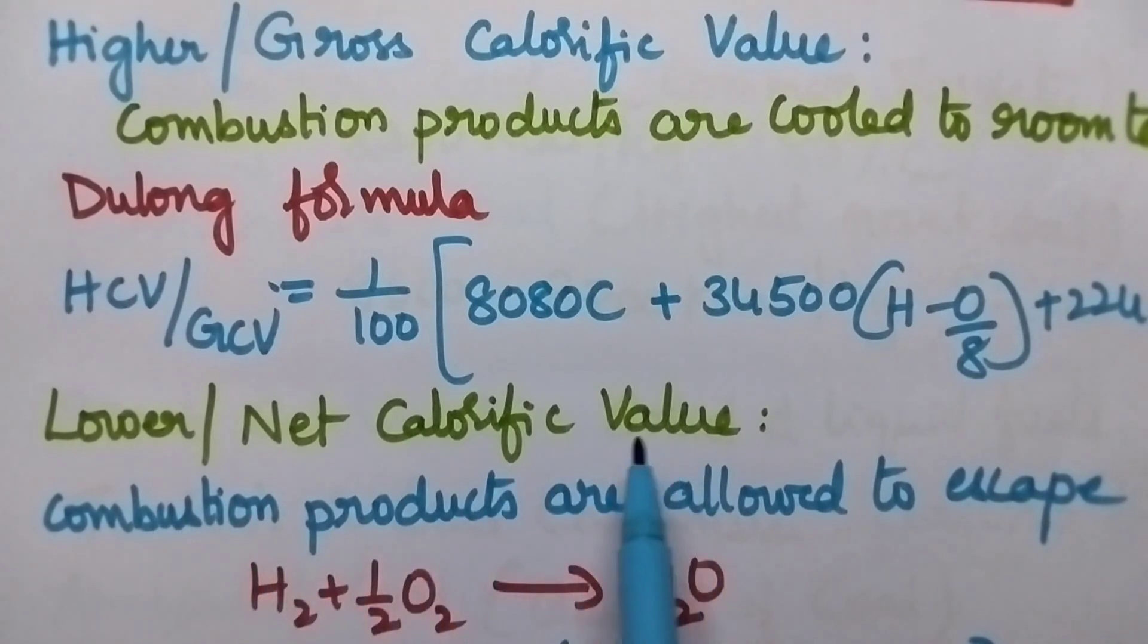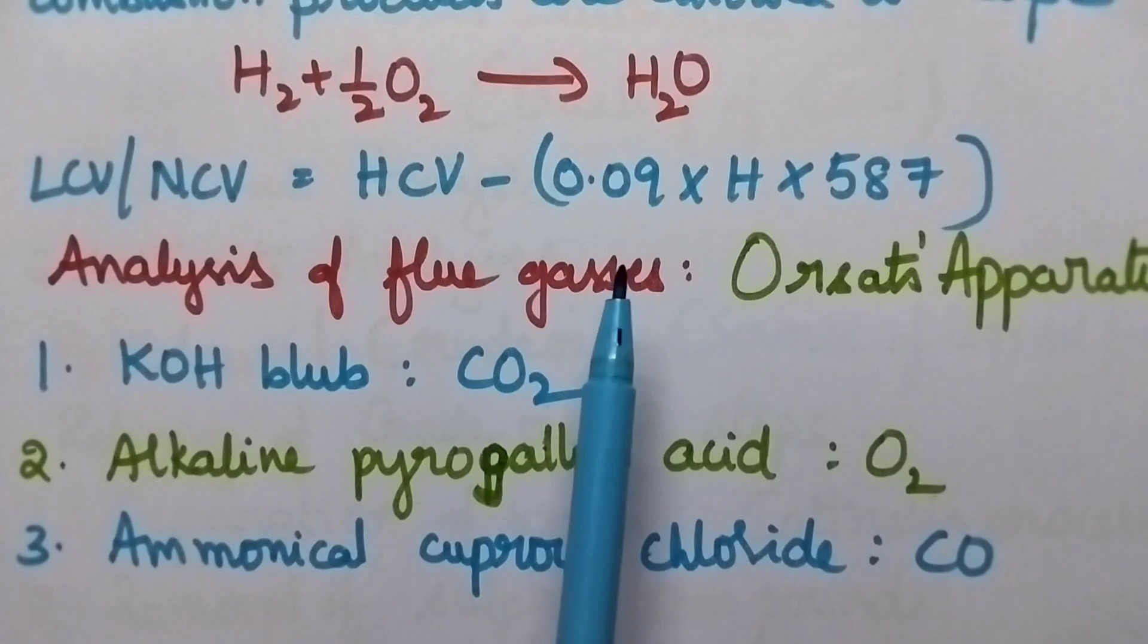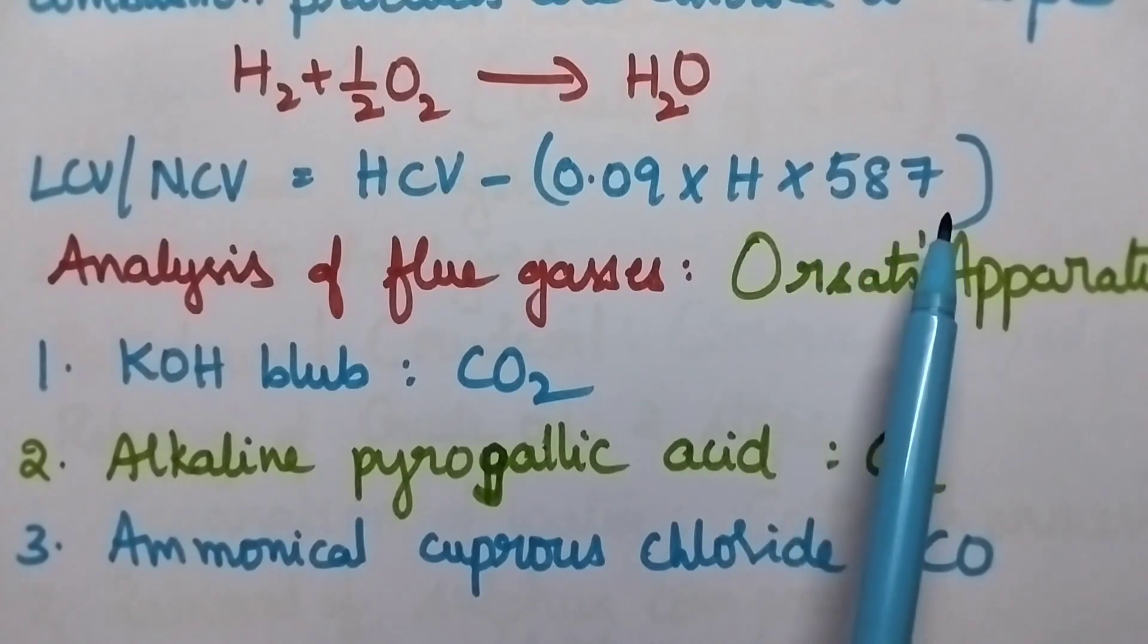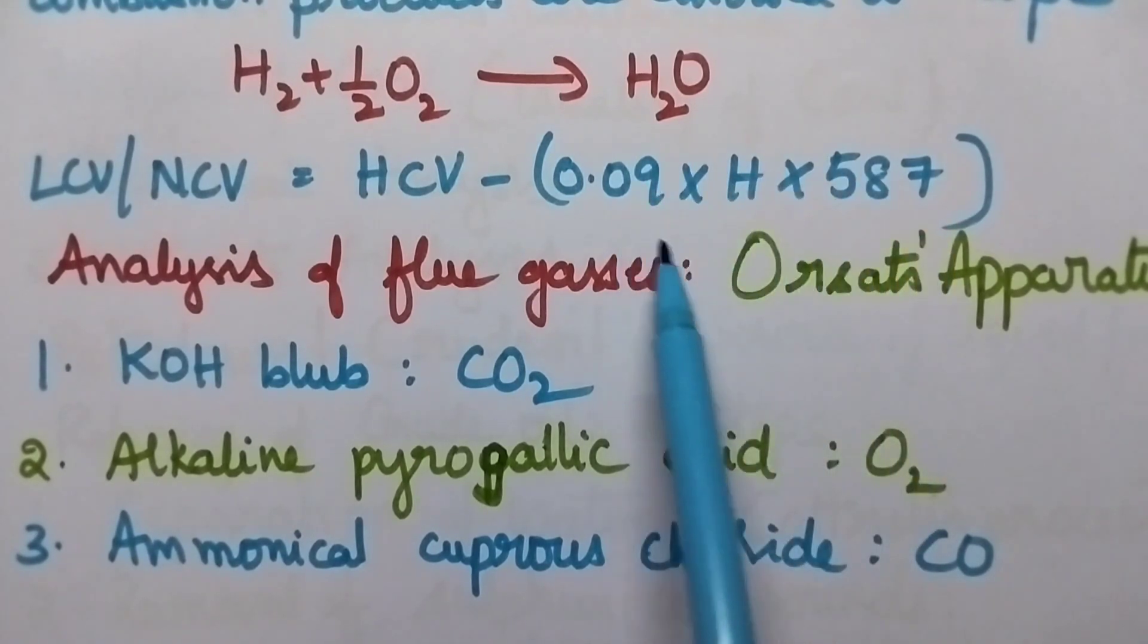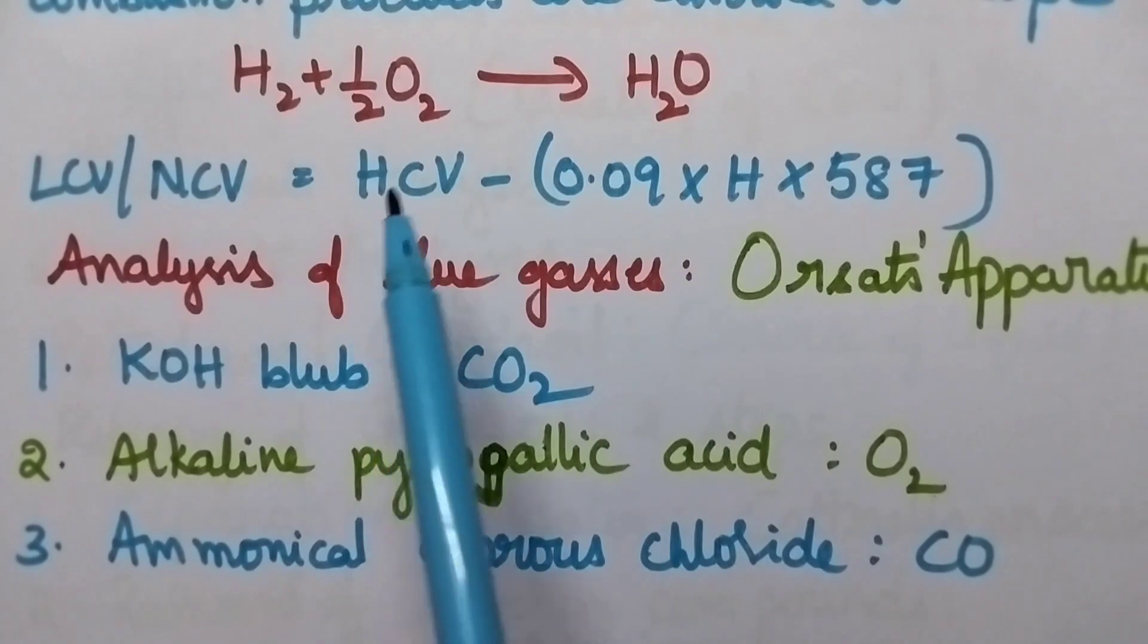Whereas moving to the lower or net calorific value, here the combustion products are allowed to escape. That means a little amount of heat will be wasted in the form of water vapor. So whenever if we consider a fuel along with the carbon, hydrogen is also present. During the combustion process, hydrogen will be converted into water and we have to remove the latent heat of water from the higher calorific value. Hence, the expression for LCV or NCV is equal to HCV minus 0.09 into H into 587. H is the percentage of hydrogen, 587 is the latent heat of steam formed. The steam will be liberated from the fuel sample and hence, in order to get the value of LCV, it should be subtracted from HCV.